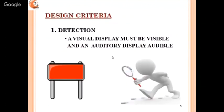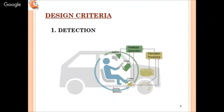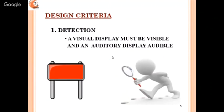There are two distinct design criteria for a display. The first is detection — a visual display must be visible and an auditory display must be audible. These are the first criteria. A visual display should not be obstructed, and an auditory display must be clearly heard by the user.